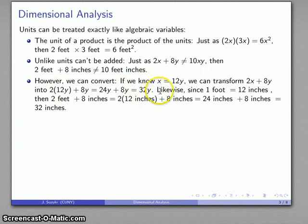Likewise, if we happen to know that one foot is 12 inches, then I can transform the expression 2 feet plus 8 inches. That's 2 times 12 inches plus 8 inches, that's 24 plus 8, that's 32 inches.